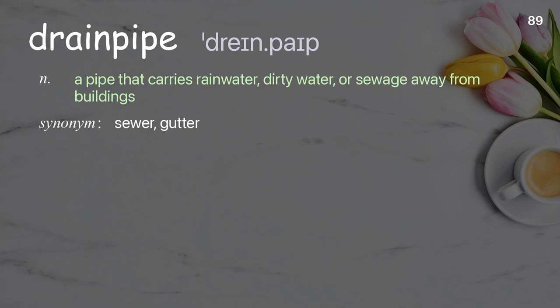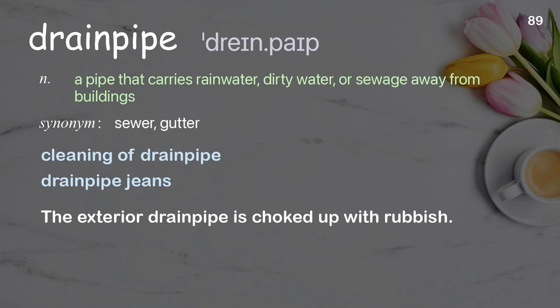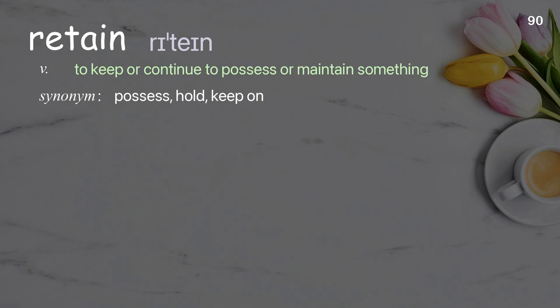Drainpipe: A pipe that carries rainwater, dirty water, or sewage away from buildings. Examples: cleaning of drainpipe, drainpipe jeans. The exterior drainpipe is choked up with rubbish.